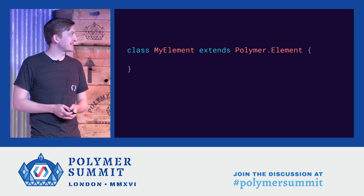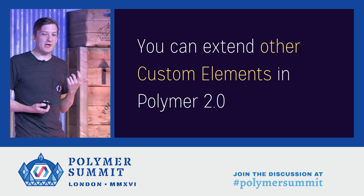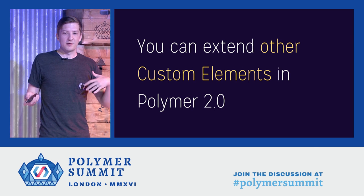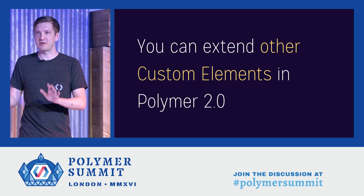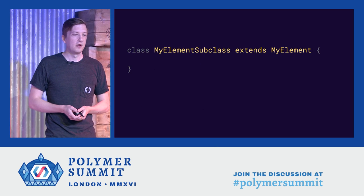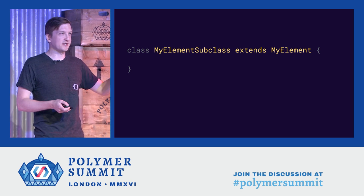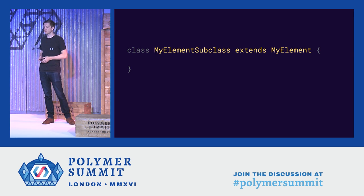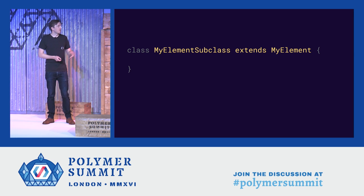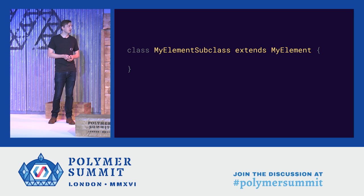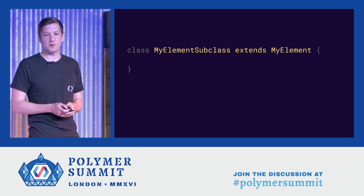Another thing you might want to do is extend another custom element. I'm really happy to say that in Polymer 2.0, you can once again extend custom elements — we had this in Polymer 0.5, took it out for a while, but it's back. To do that, your class just extends that element's class instead of extending PolymerElement directly. When you do this, make sure you're calling super in all lifecycle callbacks — super in your constructor, super.connectedCallback, and so on — so the parent element runs all its setup code.